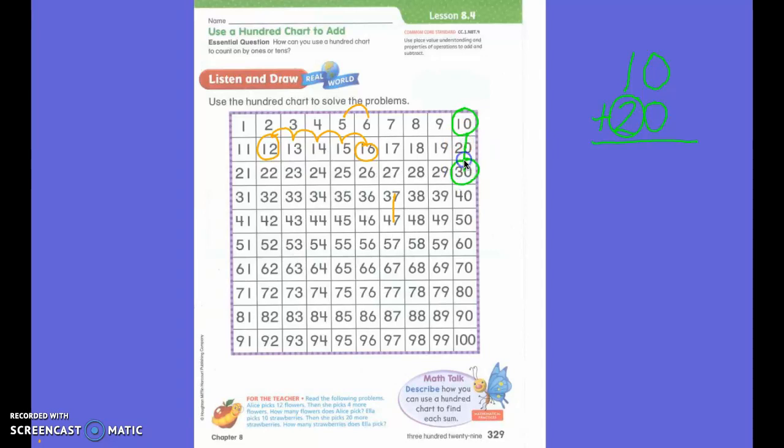And I end at 30. So where I stop is my answer. 10 plus 20 equals 30. Mathematicians, we can check ourselves by adding 1 plus 2 equals 3, then adding my zeros. Didn't we do that a couple of days ago?